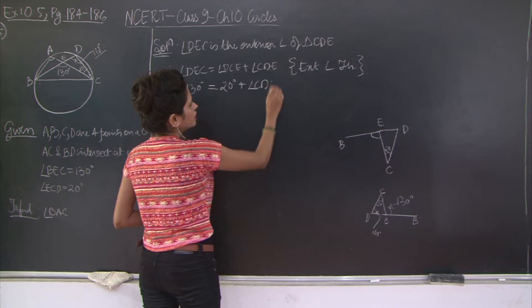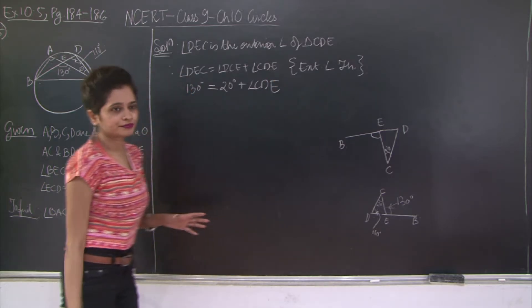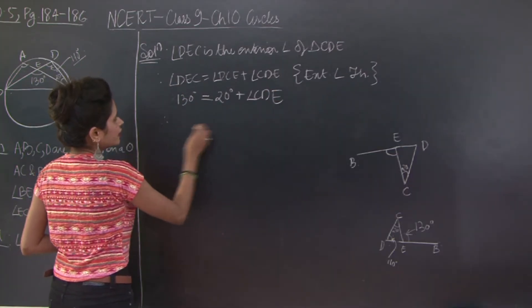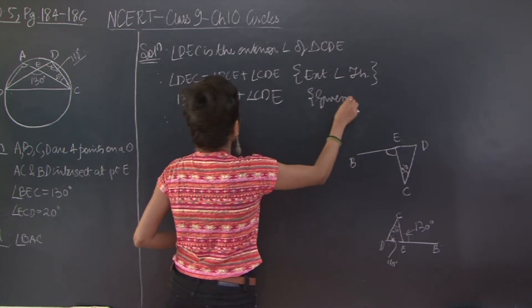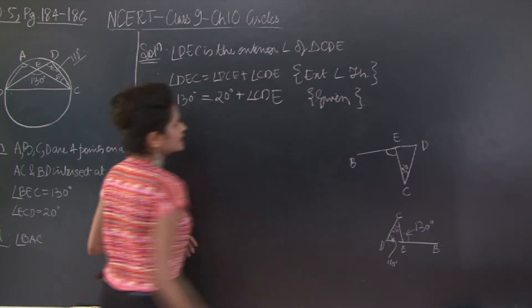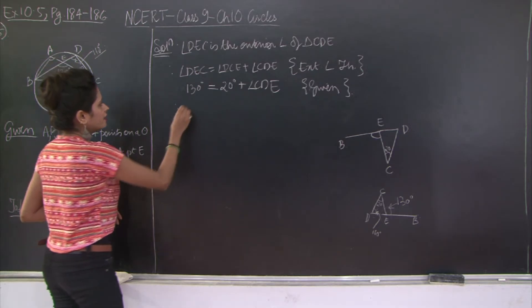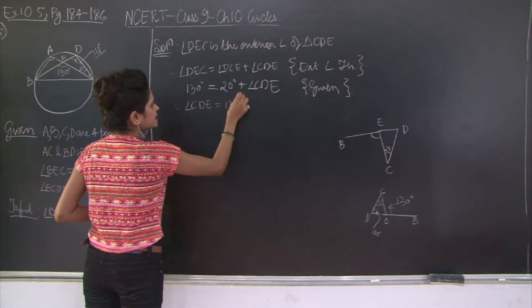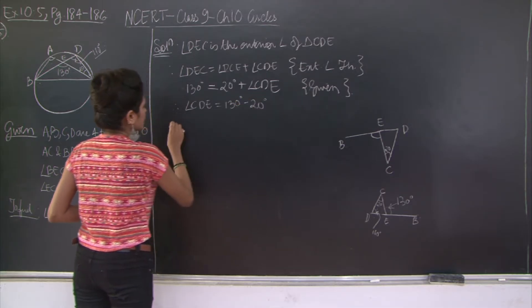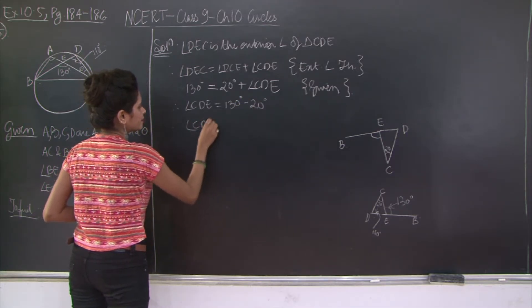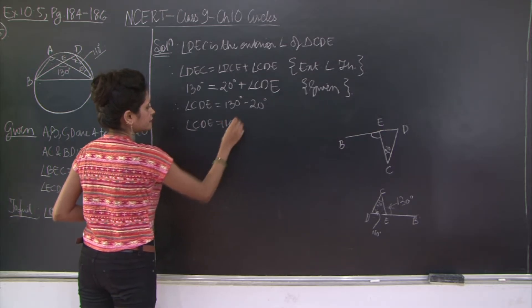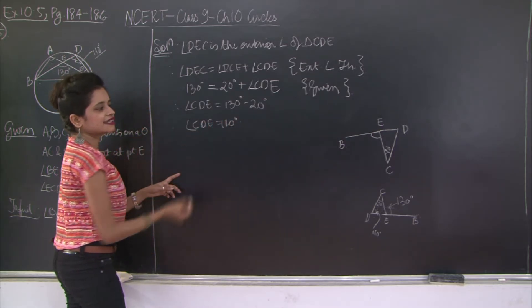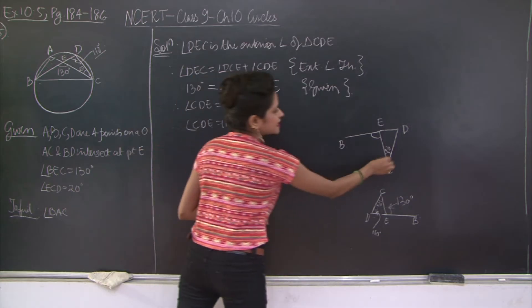So instead of CDE I can write CDB. I can write CDB or let this be CDE for now. Therefore now this is from given. The measure of angles DEC and DCE is already given. Therefore angle CDE is 130 degrees minus 20 degrees. Therefore angle CDE is equal to 110 degrees.